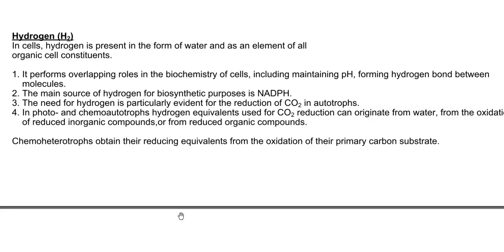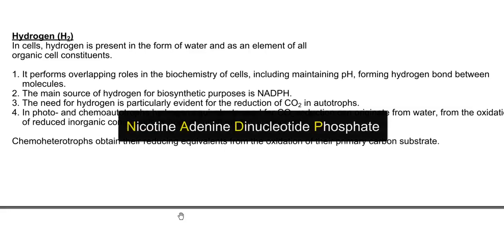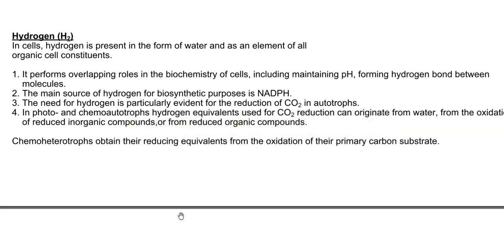The main source of hydrogen for biosynthetic purposes, especially for carbon fixation in autotrophic organisms, arises from NADPH — that is nicotine adenine dinucleotide phosphate in a reduced form. The 'H' stands for the reduced form. So this is particularly required for the reduction of carbon dioxide.